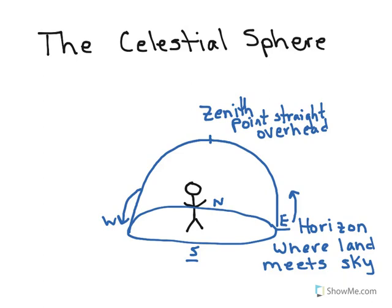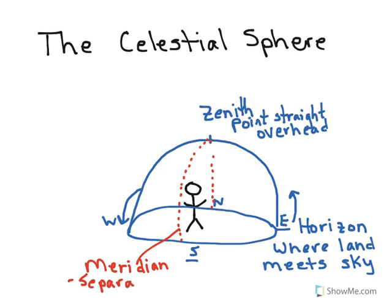Now let's connect a line starting at our northern horizon, going up to the zenith, and then coming down to our southern horizon. This is called the meridian. The meridian is what separates the eastern and western sky. And as objects rise and set, when they are on the meridian is when they are going to be at their highest point in the sky.